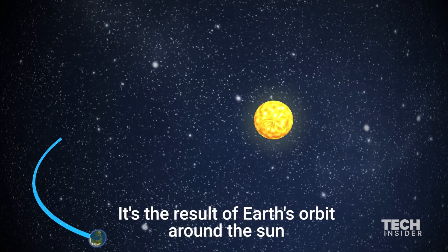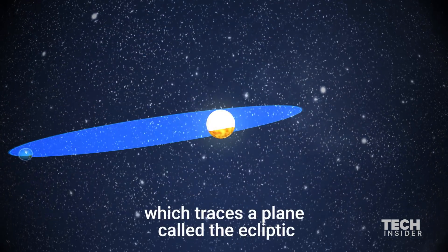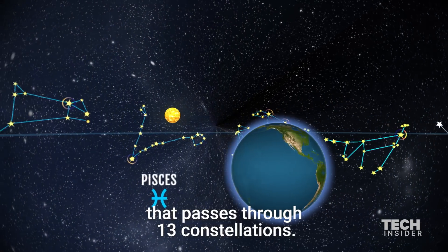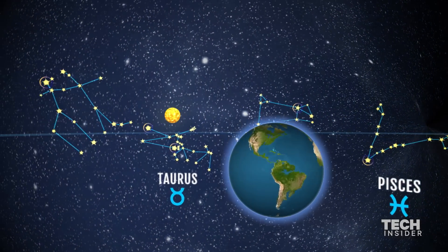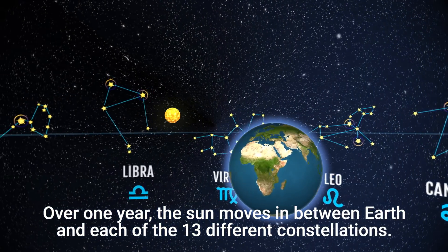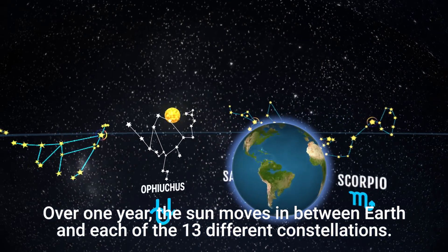It's a result of Earth's orbit around the Sun, which traces a plane called the ecliptic that passes through 13 constellations. Over one year, the Sun moves in between Earth and each of the 13 different constellations.